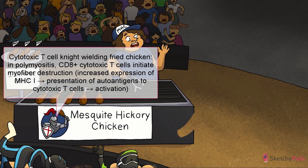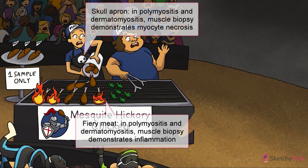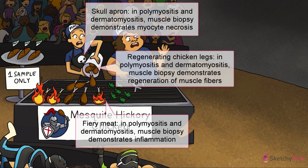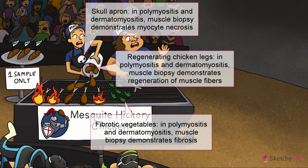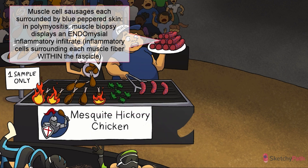Increased expression of MHC-1 leads to presentation of autoantigens to CD8 cytotoxic T cells that subsequently initiate myofiber destruction, represented here by the grill master's logo — a white cytotoxic T cell knight wielding a fried chicken leg. On histology, a muscle biopsy in polymyositis will show inflammation, hence the fire, and myocyte necrosis, represented by the grill master's badass skull apron, and regeneration and fibrosis of muscle fibers. Notice how she regenerates the chicken legs by adding fresh legs to the grill. She's added some fibrotic-looking vegetables, too. An endomysial infiltrate containing macrophages and CD8 cytotoxic T cells, which is the same...